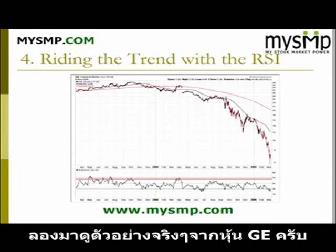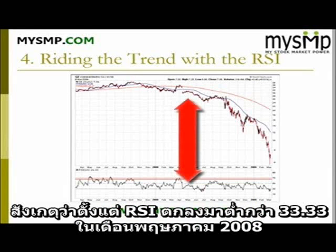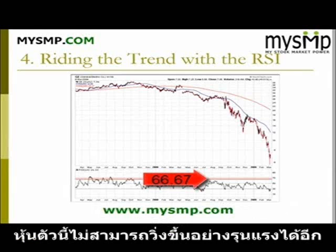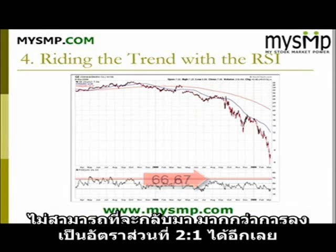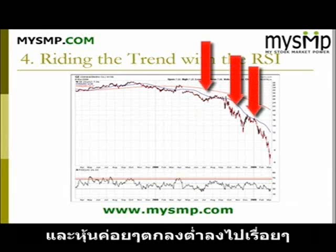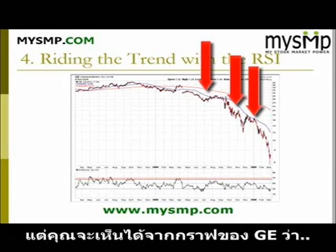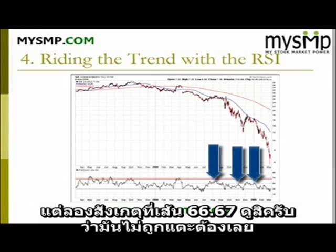Let's look at a real life example of GE. Notice how once the RSI broke down in mid-2008, the RSI never broke back above 66.67, so the security never made a strong move — enough where the up days were able to have a 2 to 1 ratio to the down days. Hence all counter rallies were weak and the stock continued lower. So many traders focused on the 50 line. However, as you can see in the GE chart, the 50 line was violated on numerous occasions, but notice how 66.67 held its ground.